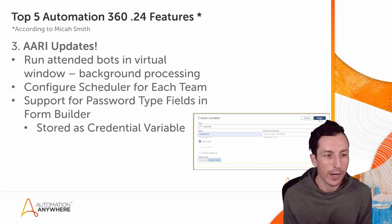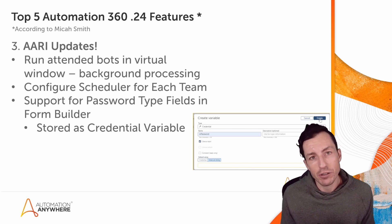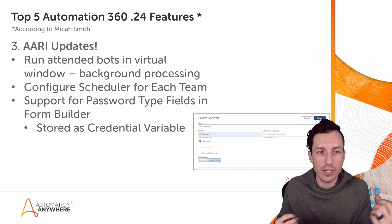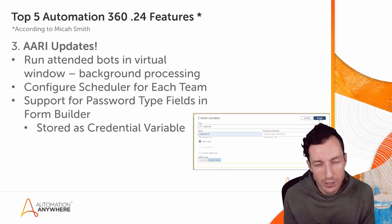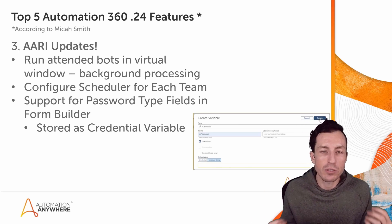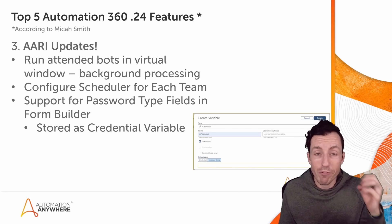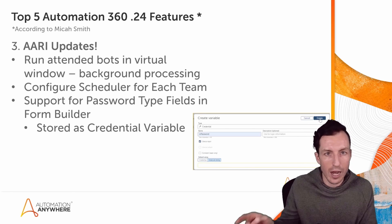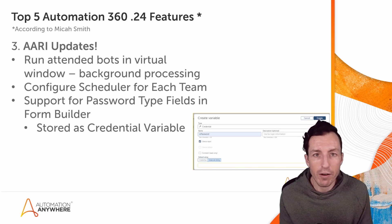You also have the ability when using AARI Web to configure a scheduler for each team. If I have a customer service team, a finance team, and an operations team, each likely has a pool of bot runners for their AARI Web processing. We can now use different schedulers pointing to specific pools of runners. As a finance user, I'm always using the finance bot runner pool, not the ones belonging to operations or customer service — great functionality for organizations to better use their bot runners.